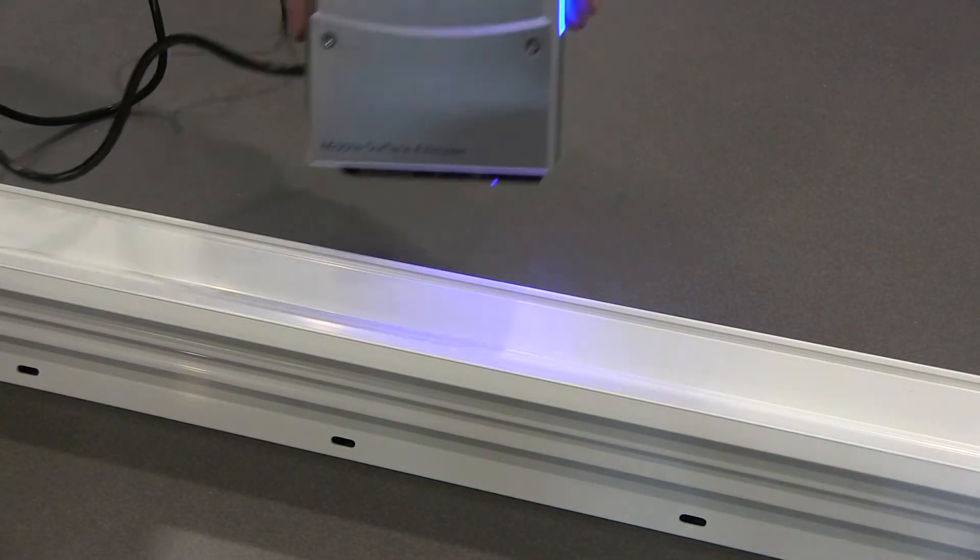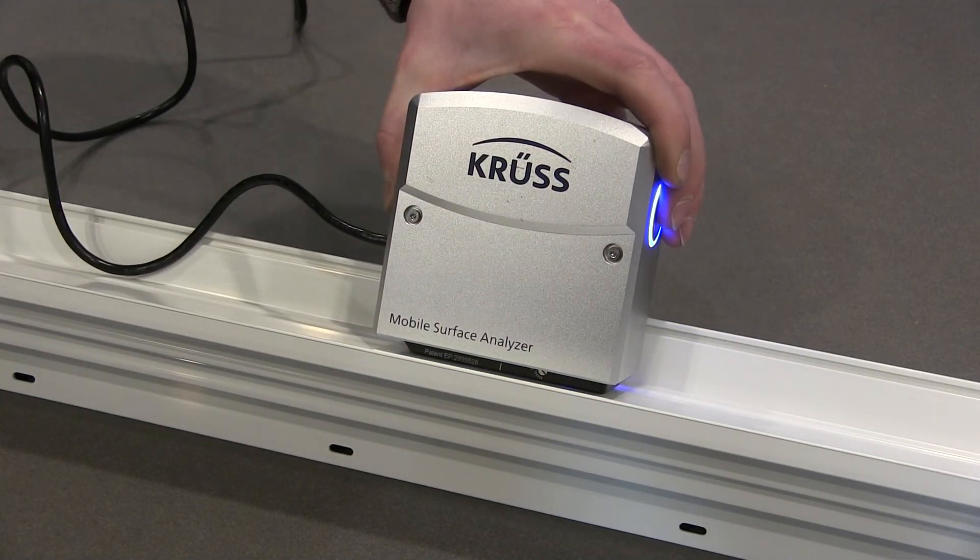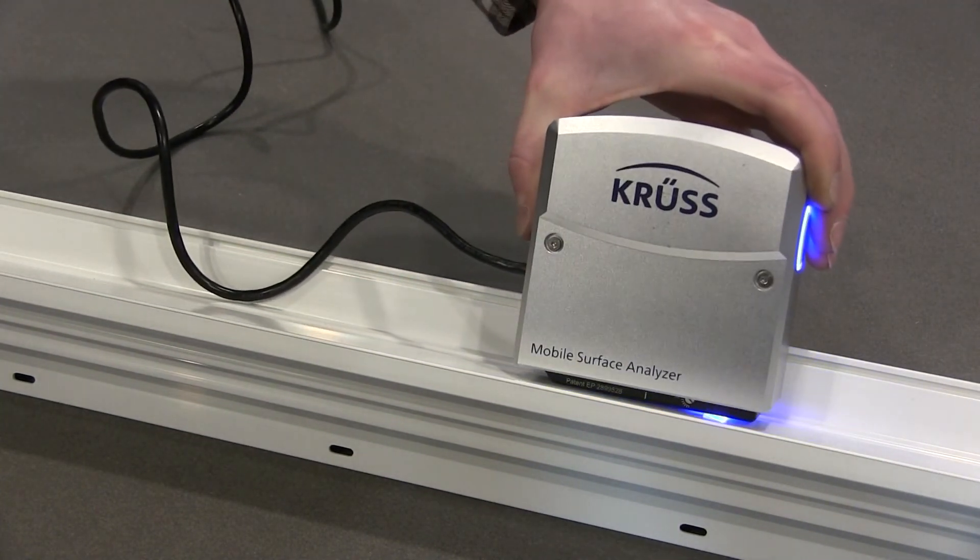Enercon uses a variety of methods to determine the effectiveness of surface treatment in our labs, including measurements for dyne level, contact angle, and surface polarity.